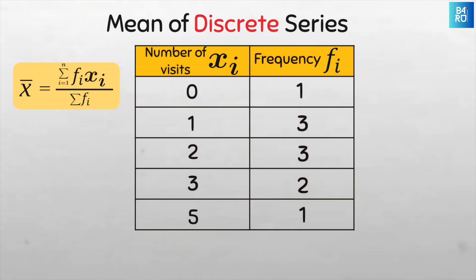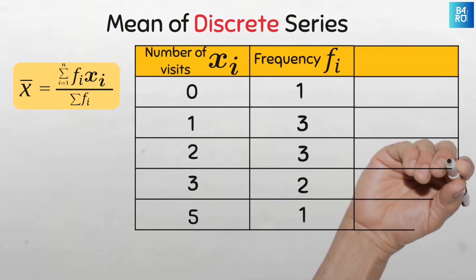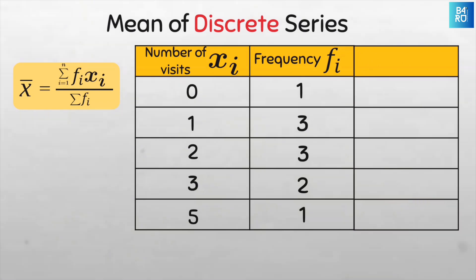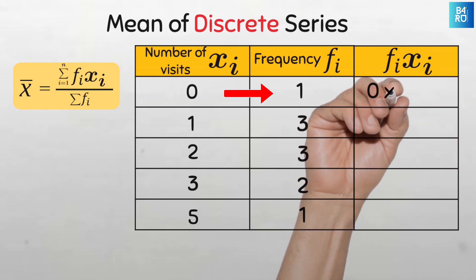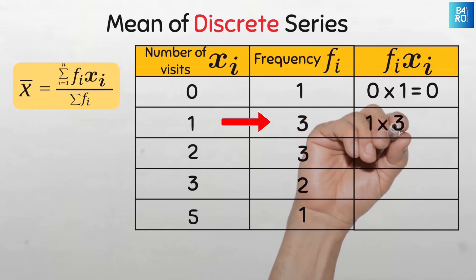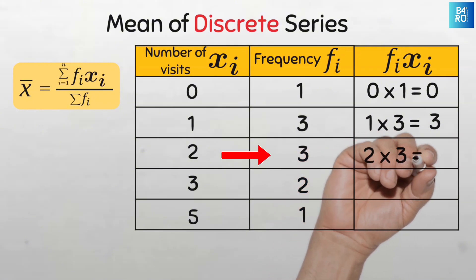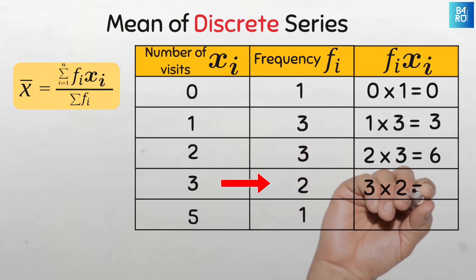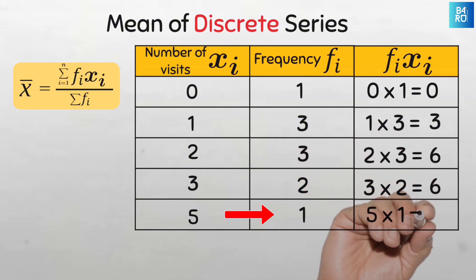And since the numerator of the formula wants us to find the product of f sub i and x sub i, let us create a new column now to do the product of the frequency and the values of x. Let's call it f sub i of x sub i. So this will be 0 times 1 which is 0, 1 times 3 which is 3, 2 times 3 which is 6, 3 times 2 is 6, and 5 times 1 is 5.